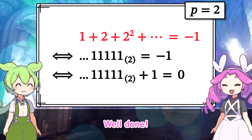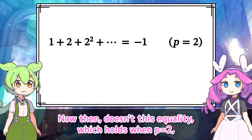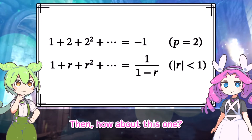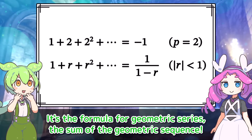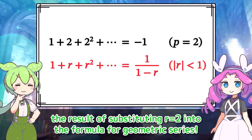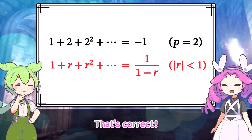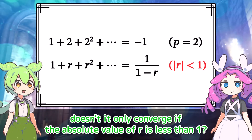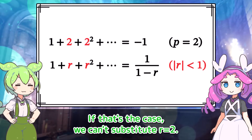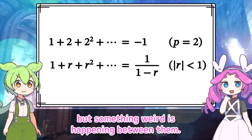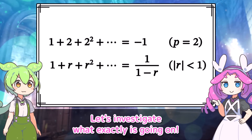So that's how it is. Well done. Now then, doesn't this equality — which holds when P equals 2 — look familiar? I've never seen such a strange equality before. How about this one? It's the formula for geometric series, the sum of the geometric sequence. I see, so this equality is the result of substituting r equals 2 into the formula for geometric series. That's correct. But for a geometric series, doesn't it only converge if the absolute value of r is less than 1? If that's the case, we can't substitute r equals 2. This is mysterious — there seems to be a strange connection between real numbers and P-adic numbers, but something weird is happening. Let's investigate what exactly is going on.